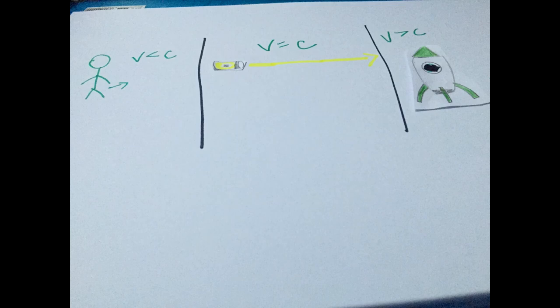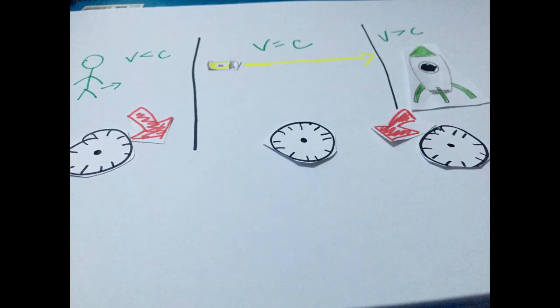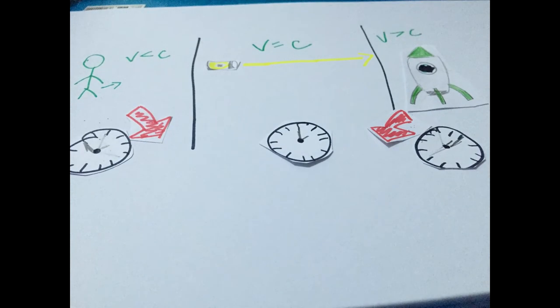You can think of the speed of light as a kind of barrier to the passage of time. When approaching the speed of light, time is positive. When traveling as a photon, a particle of light, at the speed of light, time is frozen. And when traveling faster, time becomes negative.